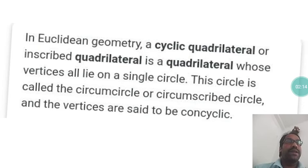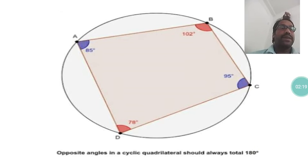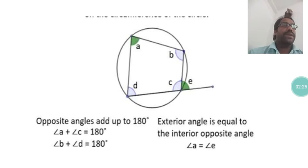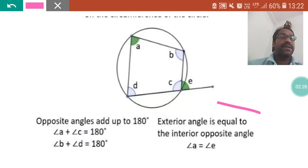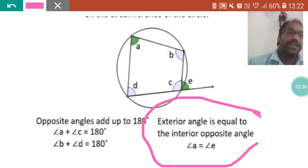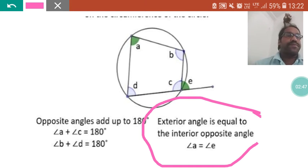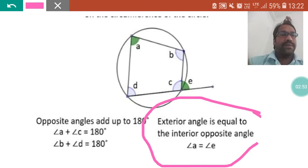This is a very important chapter. We are now reading about the cyclic quadrilateral. Last class we read the properties: opposite angles sum to 180 degrees. There is one more property — the exterior angle is equal to the interior opposite angle. In the figure, angle E is the exterior angle and angle A is the interior opposite angle; they will be equal. This is the theorem we discussed and we have solved questions on it.